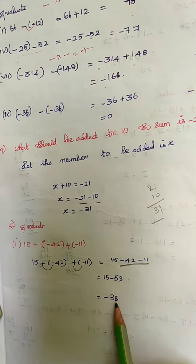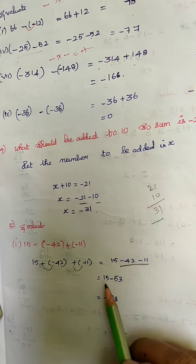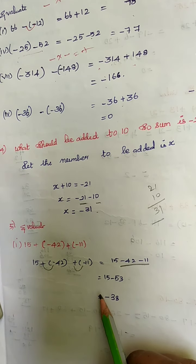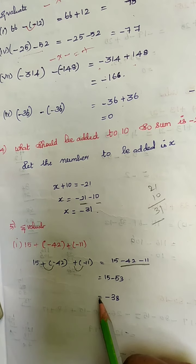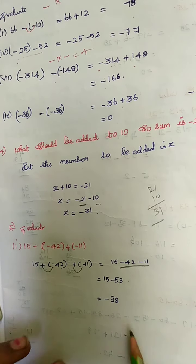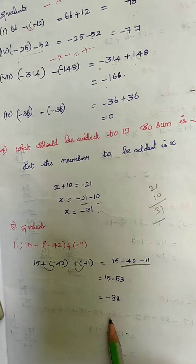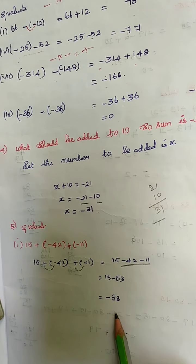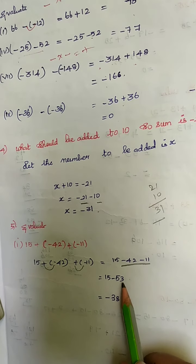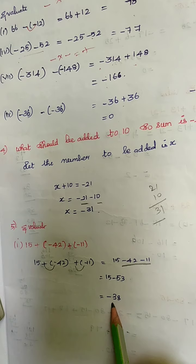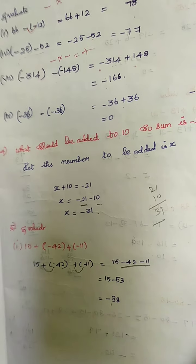15 minus 53. Now you have different number signs — plus 15 and minus 53 — so we are going to subtract. 53 minus 15 is 38. The bigger number is 53, its symbol is minus, so the answer is minus 38.